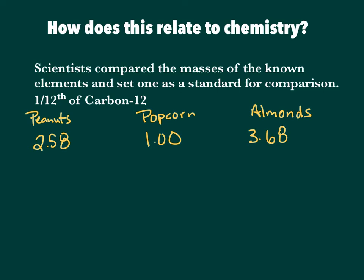You might be wondering, how does all this stuff relate to chemistry? Well, scientists took these relative masses from elements or atoms on the periodic table, and they compared them to a standard. And so once you have a standard for one of them, then you can get the masses for all the other ones by using the relative mass. So the one that they picked was carbon-12, and one twelfth of carbon-12.